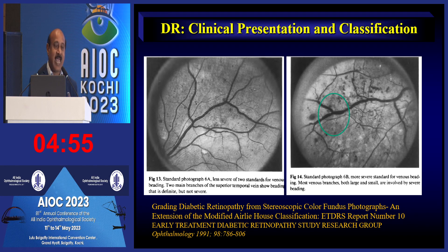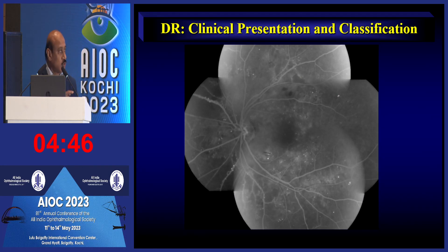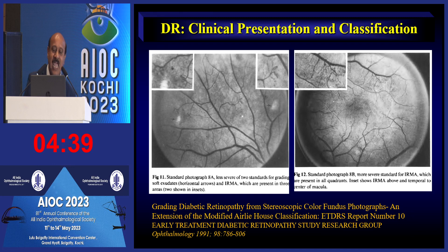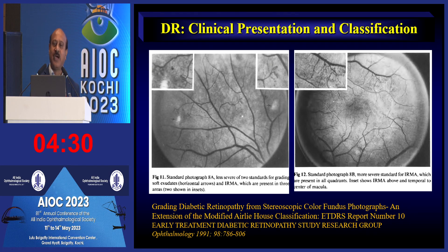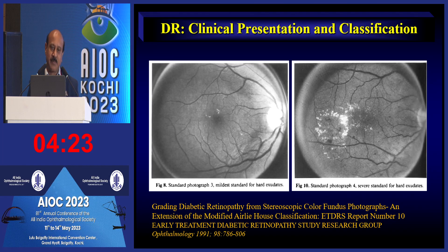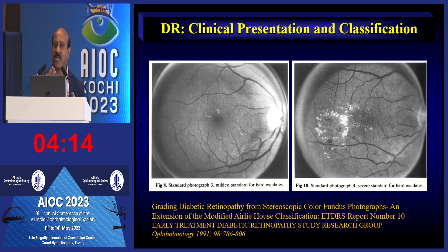IRMA (intraretinal microvascular abnormalities) is another lesion you need to be very well versed with, as it indicates severe non-proliferative diabetic retinopathy. Hard exudates can occur at any stage and can be associated simultaneously with maculopathy in either non-proliferative or proliferative diabetic retinopathy — maculopathy can be associated with both.